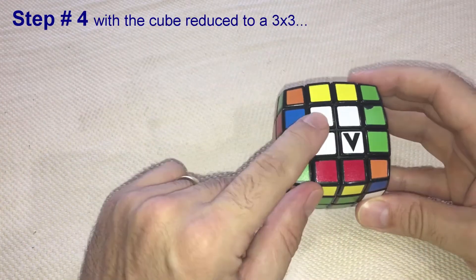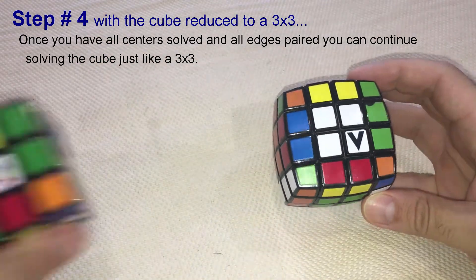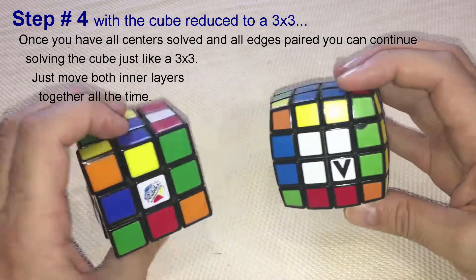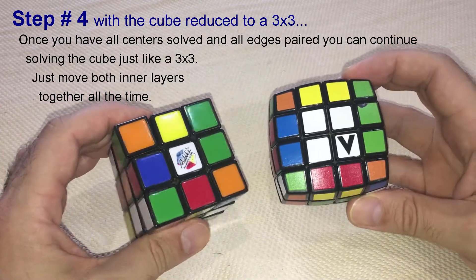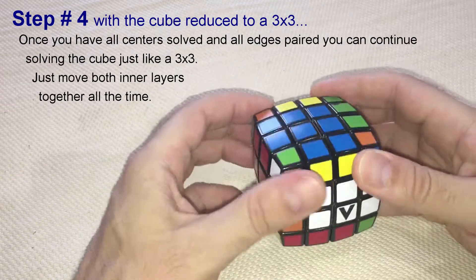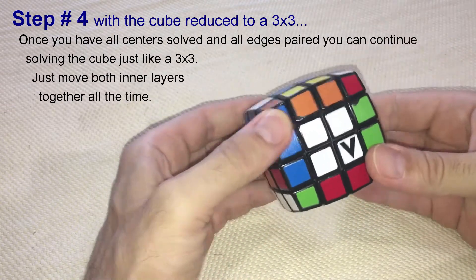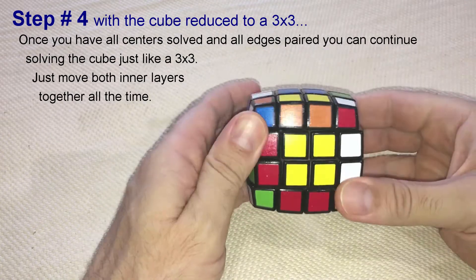At this stage, with all centers solved and all edges paired, we can continue solving the cube just like a 3x3. We just need to move both inner layers together, and by doing that, we avoid breaking apart any center block or any edge block.